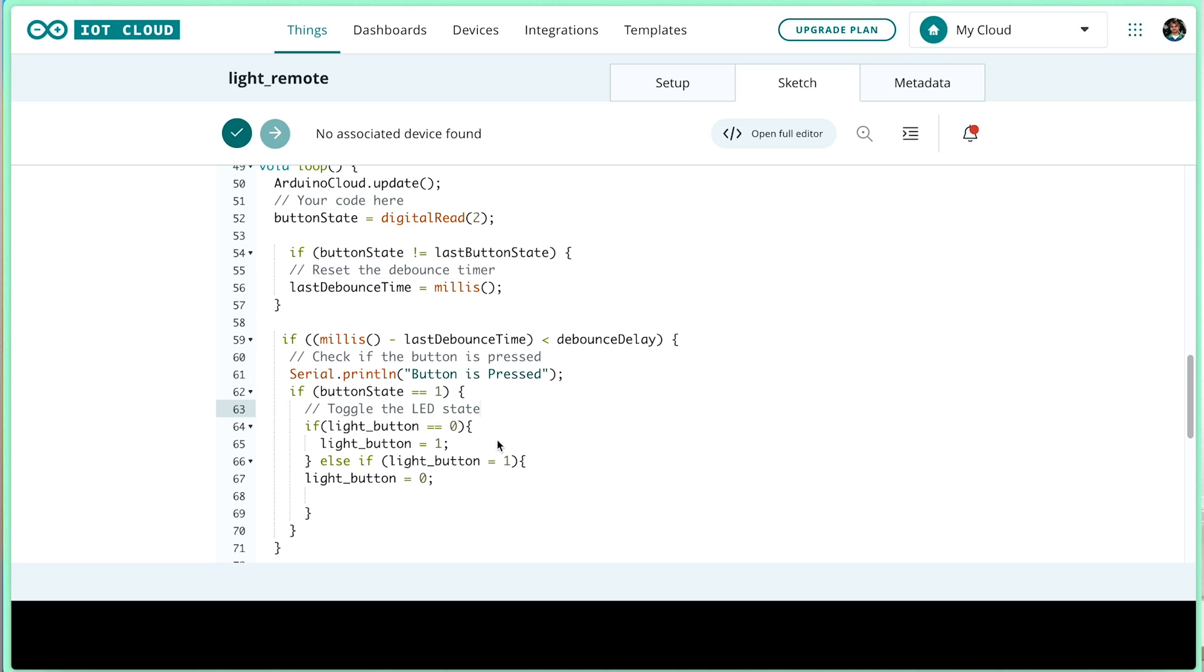the boolean toggles between on and off. Because of how the Arduino IoT Cloud handles this synchronization, sending information between two boards is as simple as updating a variable. We don't need to deal with MQTT or Bluetooth or anything else like that.